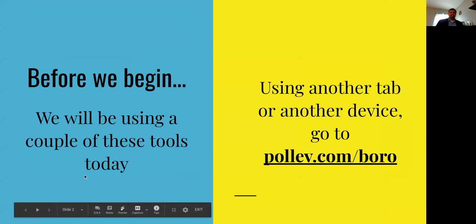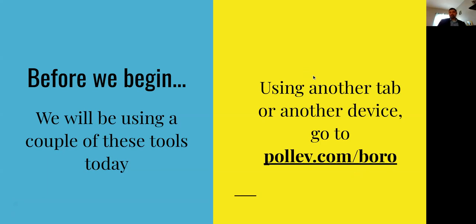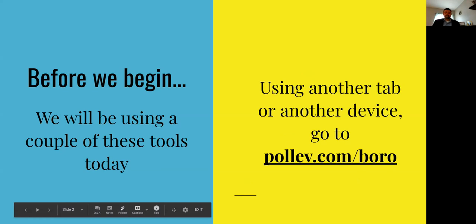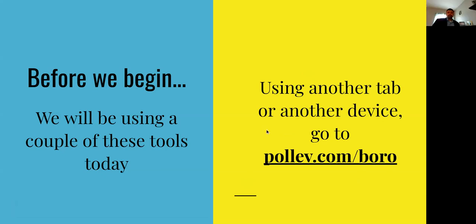I'm going to ask you to go onto another device or phone, use another tab, and go to pollev.com/borough. I was lucky using the free version of this — I was able to get my school's name in there, so I have Willingboro, Borough for short. Nowadays, unless you pay for it, they come up with a tag for you. If you log into pollev.com/borough, that allows you to participate along with us today, so you won't just be listening.